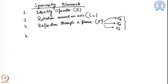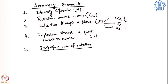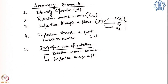And then there is also sigma D, which is a version of sigma V, but here it actually bisects two C2 axes perpendicular to the principal axis. These are the different reflection planes. Fourth is reflection through a point, which we call the inversion centre, denoted as I. The last one is the improper axis of rotation, where we do two different operations consecutively: first, a rotation around an axis, and secondly a reflection through a plane perpendicular to that CN.